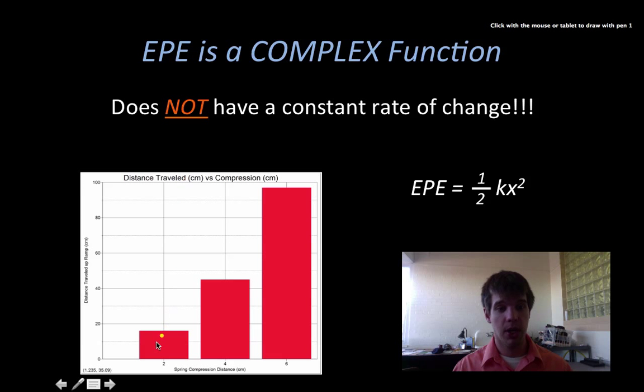So for the 2 centimeter compression, it went 17 centimeters. For the 4 centimeter compression, it went like 45 centimeters. And then for the 6 centimeter compression, it went 95 centimeters. So this is a complex function because it's not linear. Anything that's not linear, linear is considered simple. Complex is basically anything else. And a linear example requires that we have a constant rate of change.